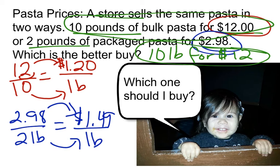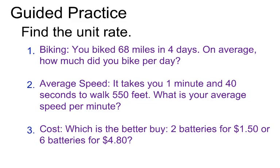Next time you're shopping with your parents, use this to figure out which one to buy. Now it's your turn — find the unit rate for these problems. Biking: you biked 68 miles in 4 days; on average, how much did you bike per day? Next, it takes you 1 minute and 40 seconds to walk 550 feet; what is your average speed per foot per minute? Remember to convert 40 seconds to minutes — there are 60 seconds in a minute, so it shouldn't just be 1.4. Last, which is the better buy: 2 batteries for $1.50 or 6 batteries for $4.80? Pause the video and figure these out on your own.